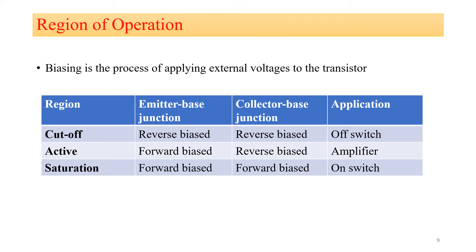The second region of operation is the active region. When the base-emitter junction is in forward bias and the collector-base junction is in reverse bias, the transistor is in the active region, and it can be used as an amplifier. The third region is saturation — when both the base-emitter junction and collector-base junction are in forward bias, the transistor is in saturation region, and it can be used as an on switch.